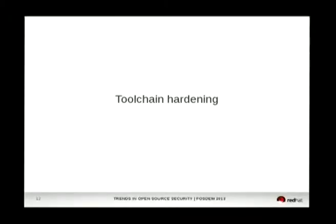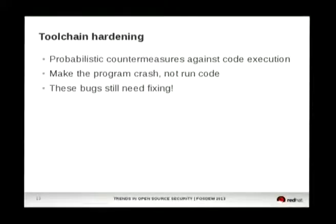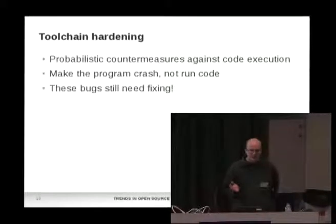The next part is toolchain hardening — basically about changing GCC, binutils, the kernel, and everything that lies below most programs running on GNU/Linux to reduce the impact of security vulnerabilities. Most of these countermeasures are probabilistic countermeasures against code execution, meaning there's always a non-zero probability an attacker gets through because randomness is involved. The countermeasures fall into two areas: making it more difficult to write to a specific memory location affecting control flow, and making it harder to write a value with meaningful impact.